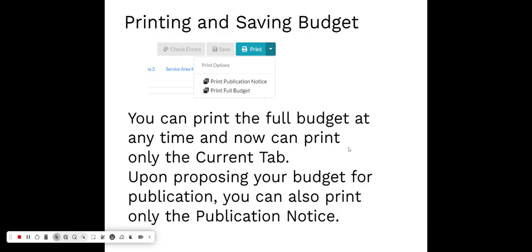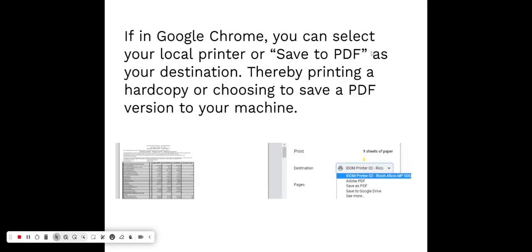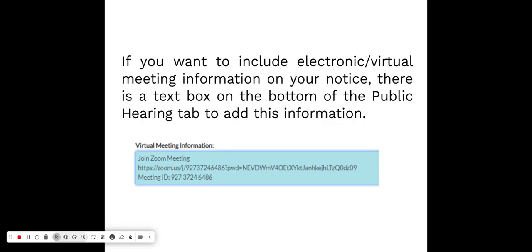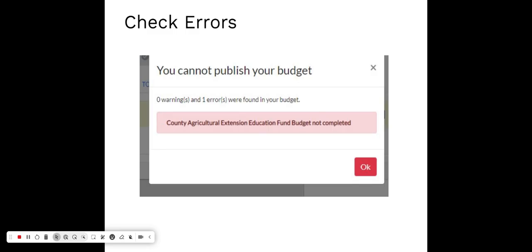You can print the full budget at any time or just the current page. Once you propose your budget for publication, you can also print just the publication notice. In Google Chrome, you can select your local printer for a hard copy or save to PDF. Supplementary details: you enter revenue and expense details on the supplemental detail pages for all three years, and that data pulls forward to your adopted budget summary and hearing tabs. If you want to include electronic or virtual meeting information on the notice, there is a text box on the bottom of the public hearing tab, and you can also put it in the location space on your notice.